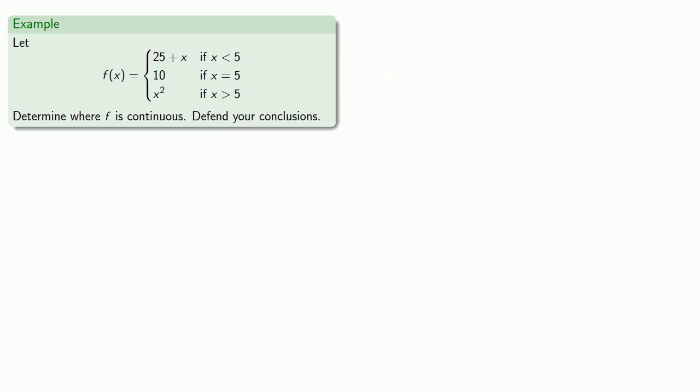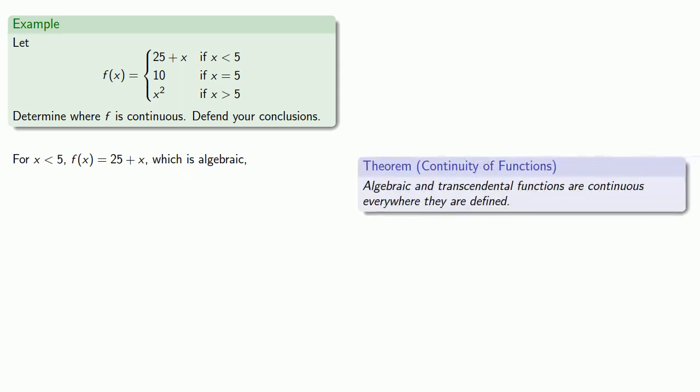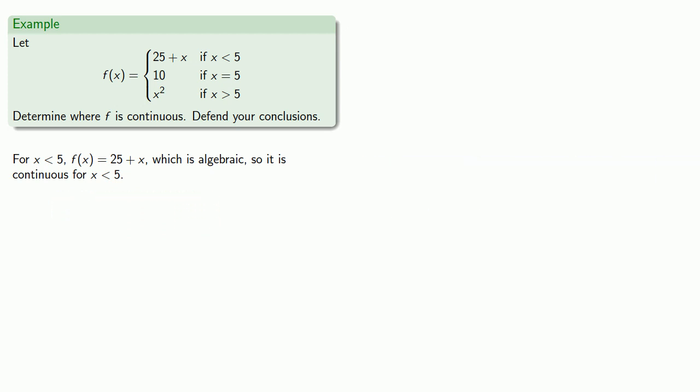For x less than 5, our function is 25 plus x, which is algebraic. And one of the things we know is that algebraic functions are continuous everywhere. So f of x is continuous for x less than 5. Likewise, for x greater than 5, f of x is x squared, which is also algebraic. And so our function is also continuous for x greater than 5.